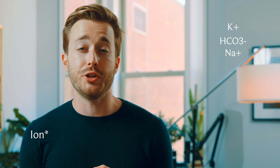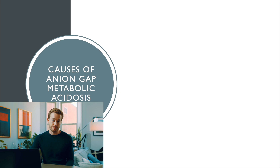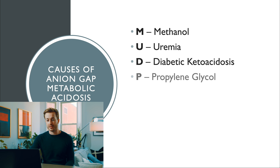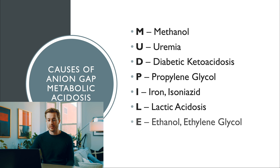The first one is MUD PILES, and these are all causes of anion gap metabolic acidosis — meaning there's some acid coming from the body that isn't from potassium, bicarbonate, sodium, or chloride. M is methanol, U is uremia, D is diabetic ketoacidosis, P is propylene glycol, I is iron and isoniazid, L is lactic acidosis, E is ethanol or ethylene glycol, and S is salicylates like aspirin.